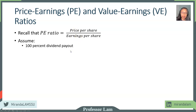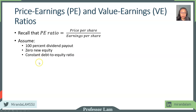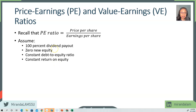Let's assume that a company will pay out 100% of its earnings as dividends, will not sell any new stock, and will have no stock repurchase. The company will also maintain a constant debt to equity ratio and a constant return on equity. These are very limited and restrictive assumptions, but they make the demonstration a lot easier. Relaxing these assumptions will make the calculation more complicated, but it does not change the overall conclusion.